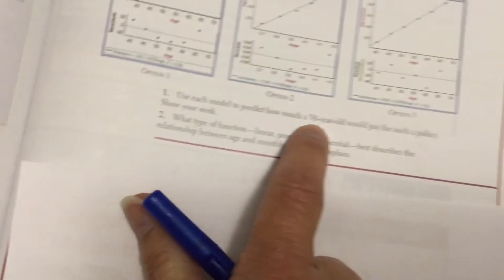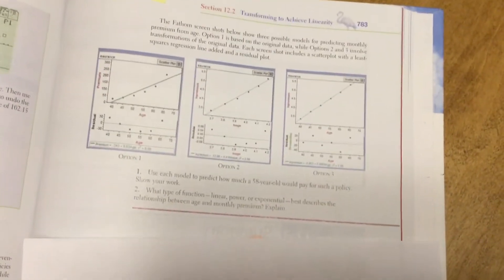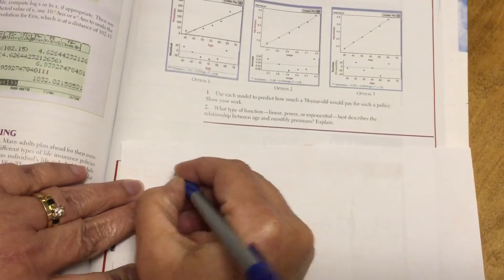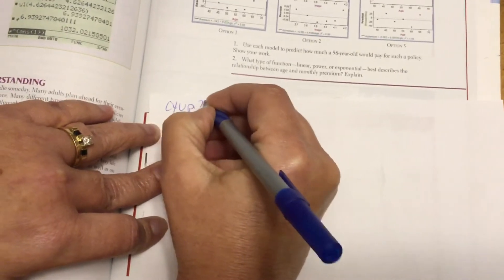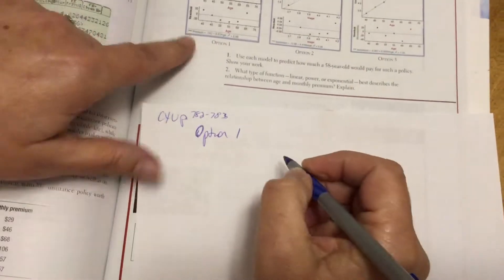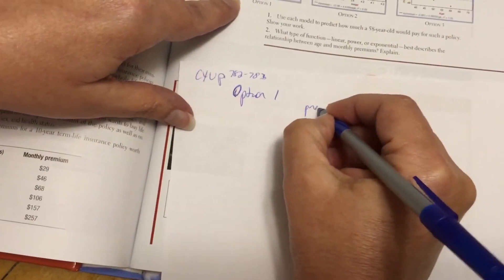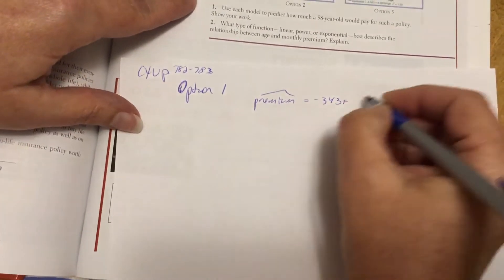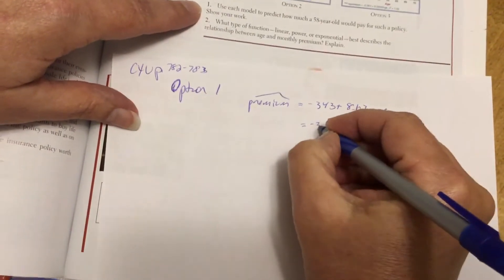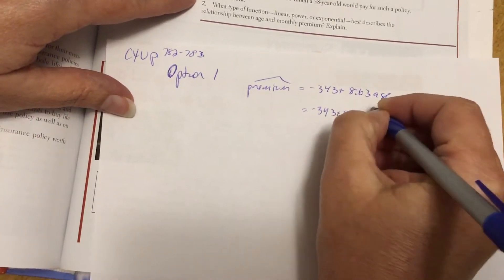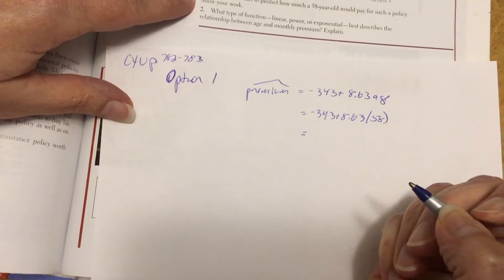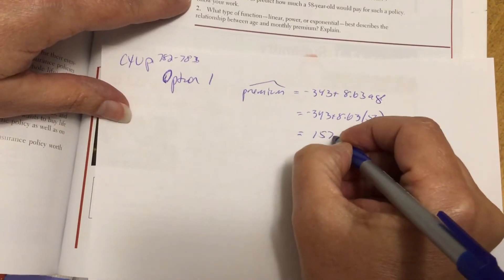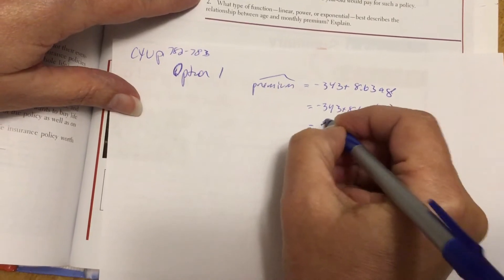So let's come down here and use each model to predict how much a 58-year-old would pay for such a policy. Option one, we put check your understanding, page 782 to 783. So option one, we would have predicted premium is negative 343 plus 8.63 times the age. So if I plug in 58, I would get a predicted premium of 157.54, $157.54.